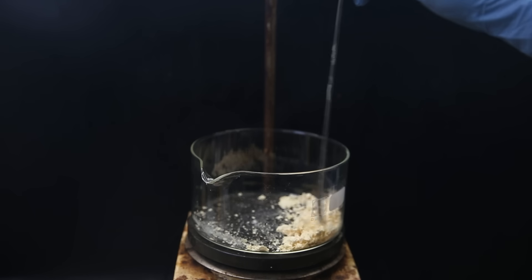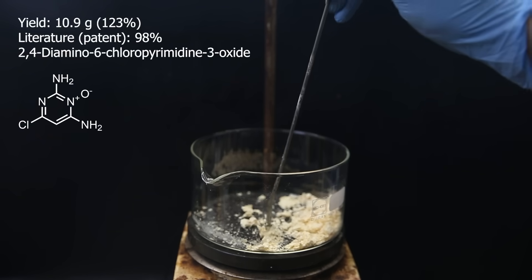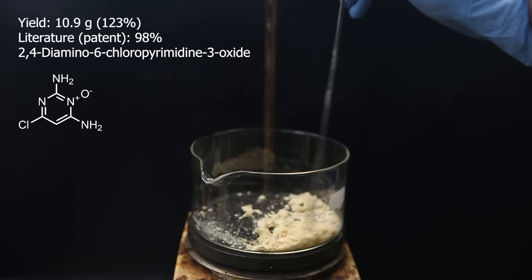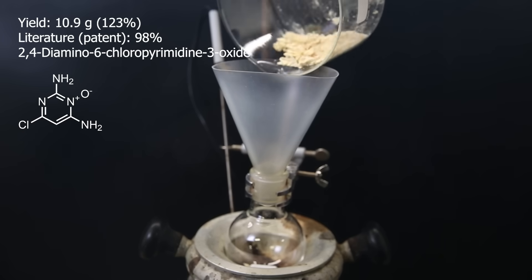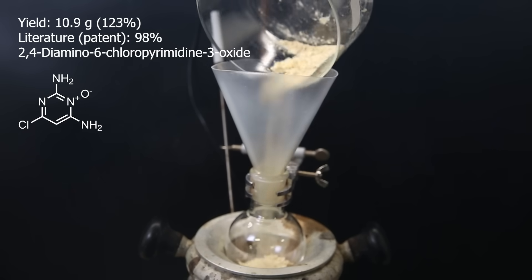I am then left with a yellow solid. It is still slightly wet so it gives a weight of 10.9 grams and a yield of 123%. It doesn't have to be completely dry so the real yield will remain unknown. I forward all of the material to the final reaction where I make minoxidil.